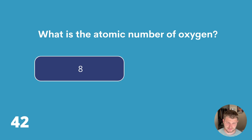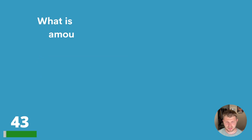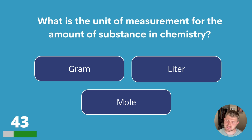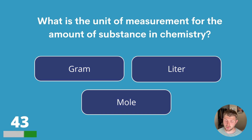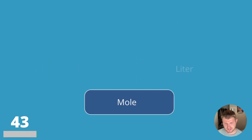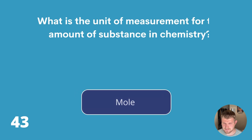Question forty-three. What is the unit of measurement for the amount of substance in chemistry? Gram, liter or mole? The answer is mole.